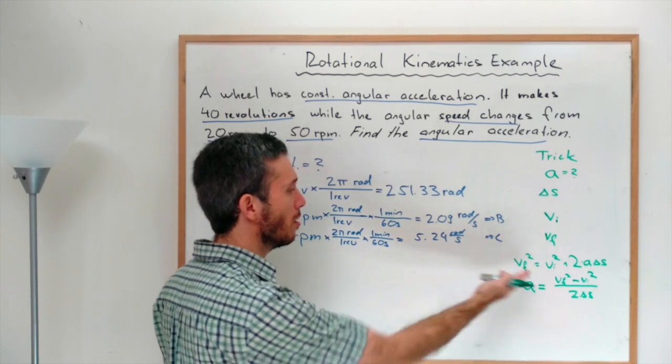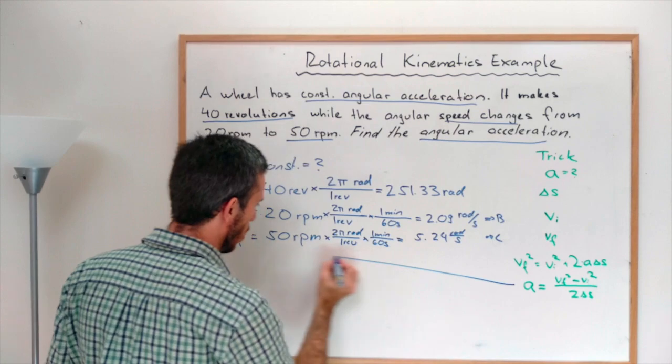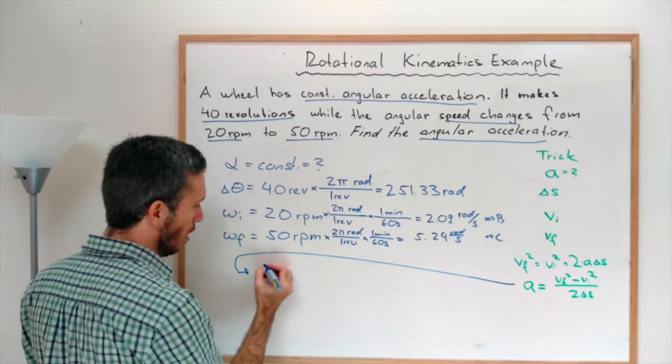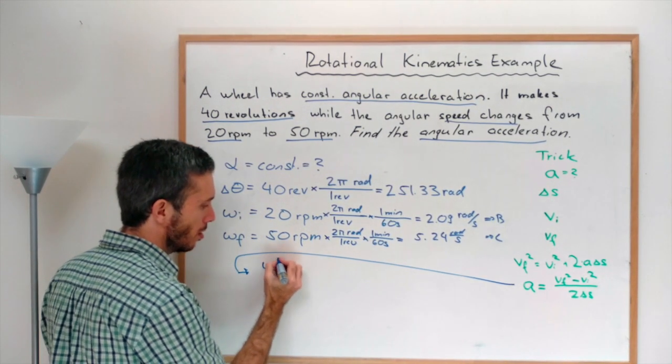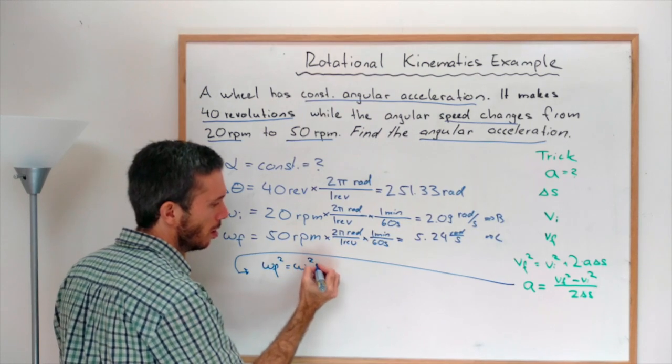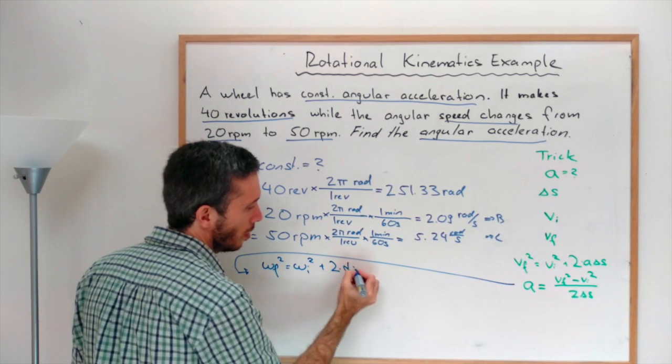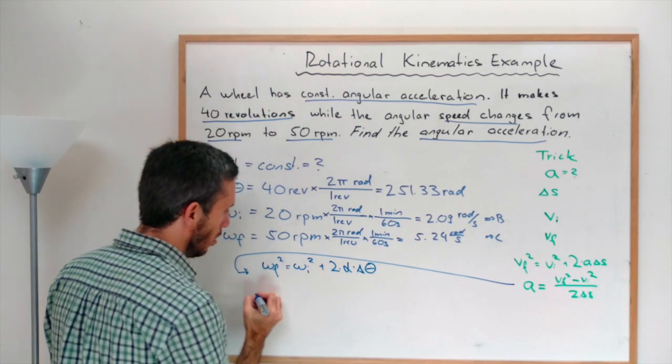Now let's just translate this back to the rotational case. Let's go back. Rotational case. We would have had omega final squared is omega initial squared plus 2 times alpha times delta theta.